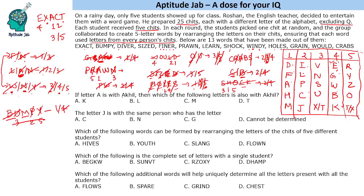Now let us look at the questions. If letter A is with Akhil, which of the following letters is also with Akhil? The answer is M, since A is in group 1 which also contains M. The letter J is with the same person who has which letter? J is with the same group as C, L, I, or P — the right answer is C. Which of the following words can be formed by rearranging the letters? HIVES — H and S are not in the same group, so no. YOUTH — Y and O are not together, so not possible. SLANG — S and N are not in the same group. So the answer is FLOWN: F, L, O, W, N — yes, FLOWN is possible.